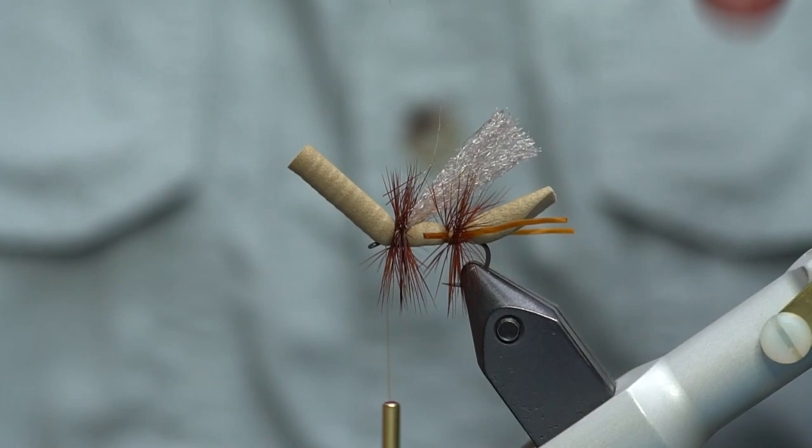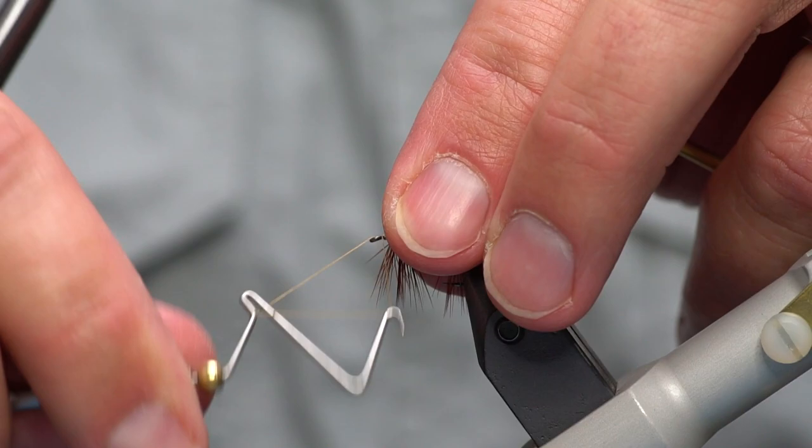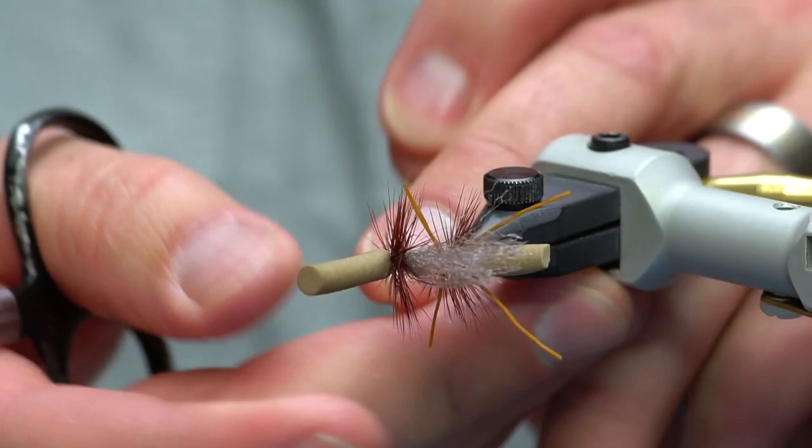Next up we'll whip finish and get rid of the thread. Use the trusty Tiemco midge whip finish. Trim that guy away.